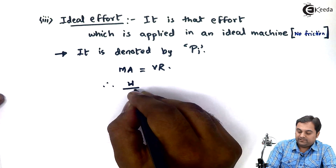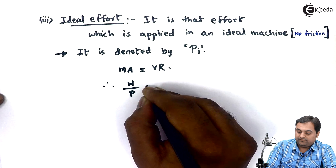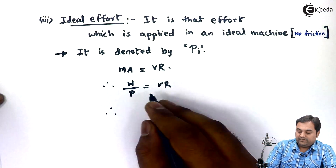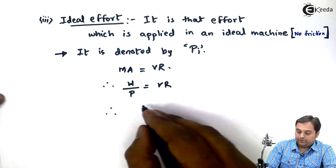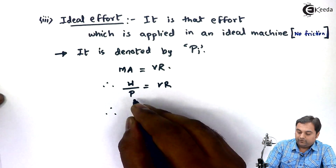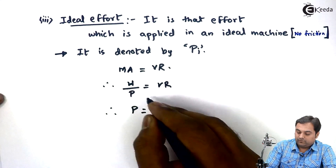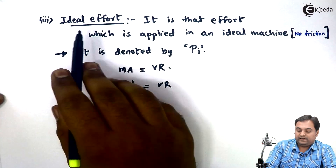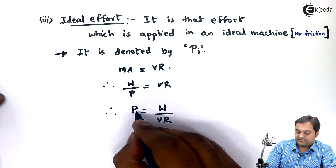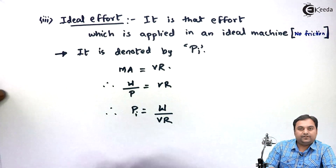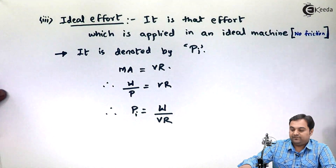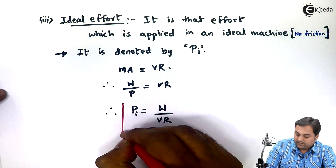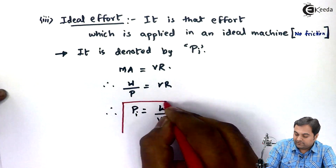Therefore, mechanical advantage equals load upon effort, which equals VR. Keeping effort on one side, P equals W upon VR. Since we want ideal effort, we write suffix i — so ideal effort Pi is given by W upon VR.